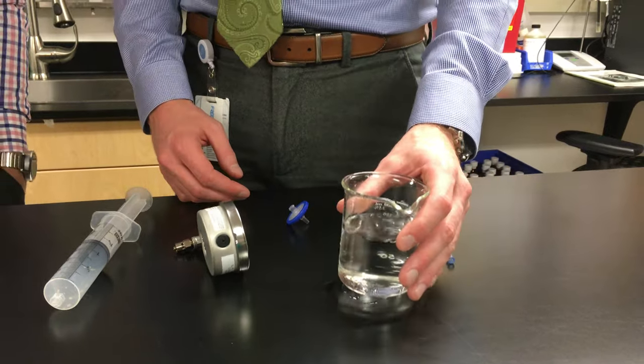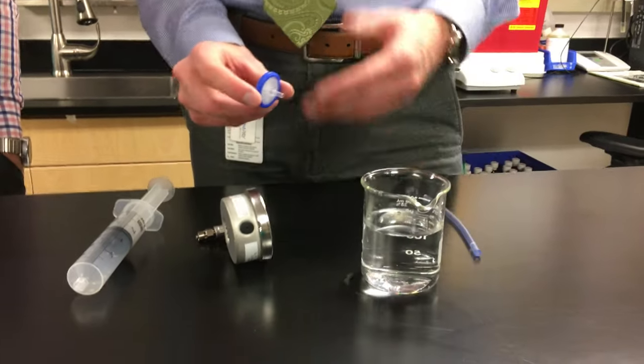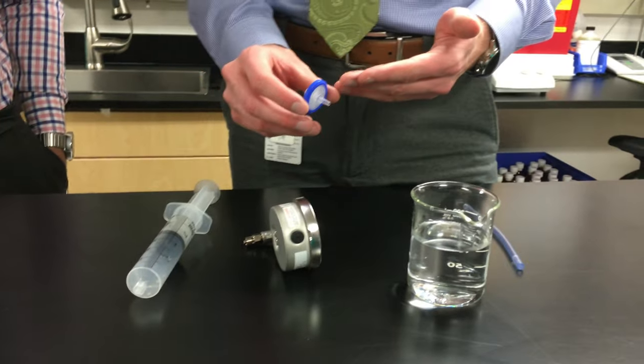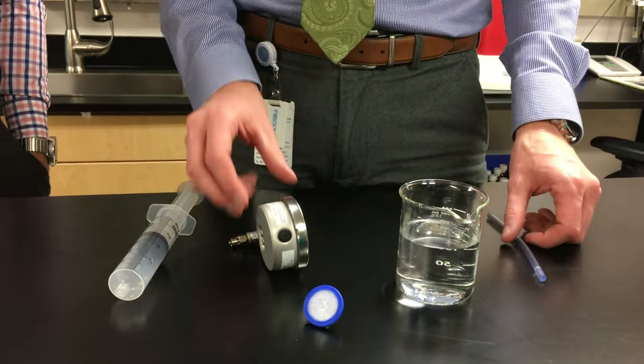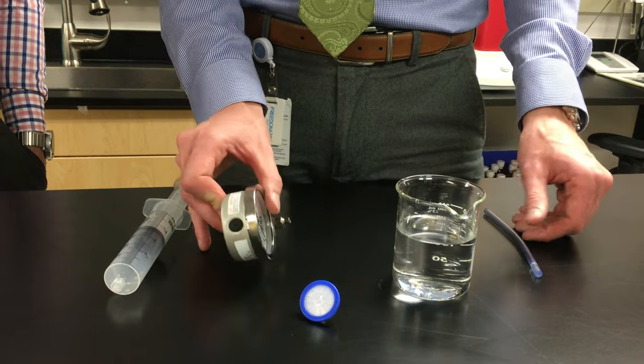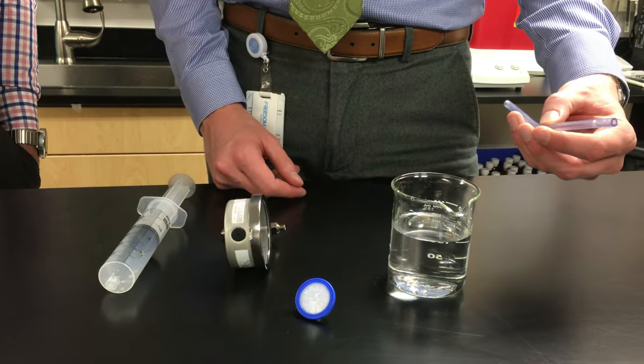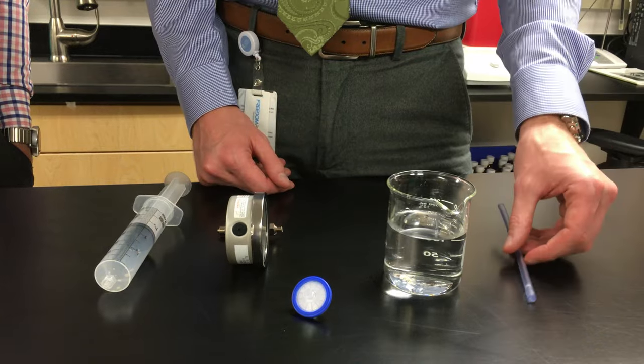We're demonstrating the bubble point test. Here we have some water, and this is a new filter that we'll assume was used for sterilizing. It's a 0.22 micron filter. We have our PSI gauge to measure the bubble point and an end tube to connect into the water.